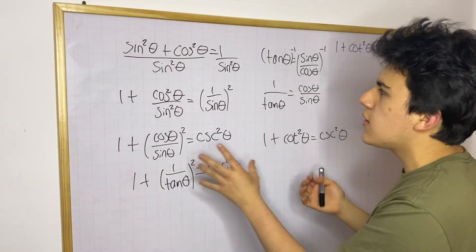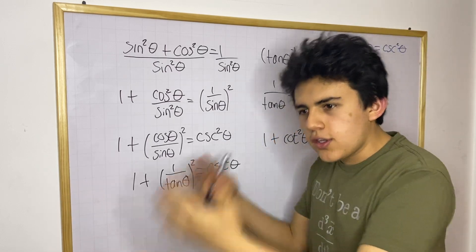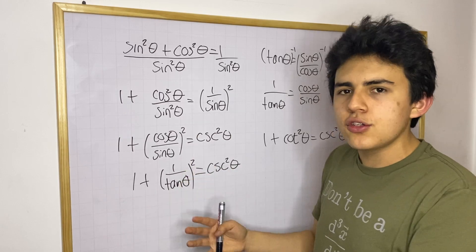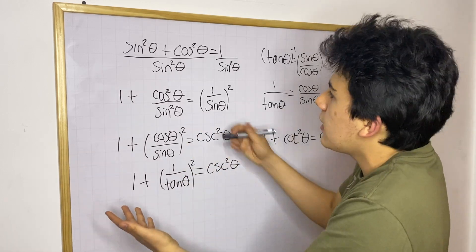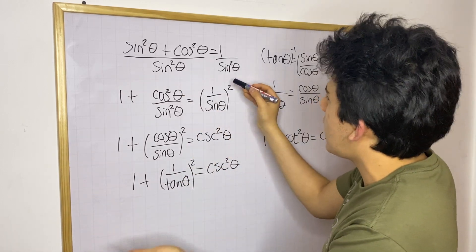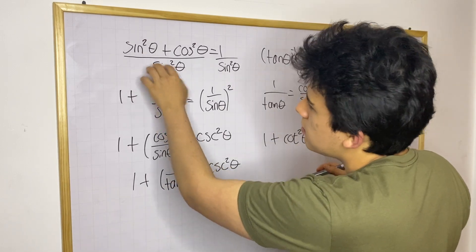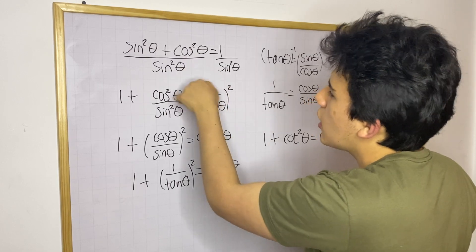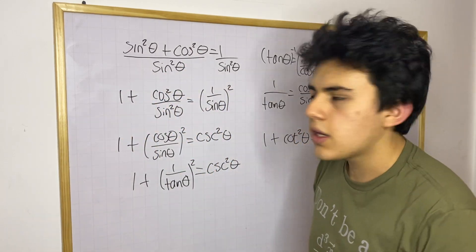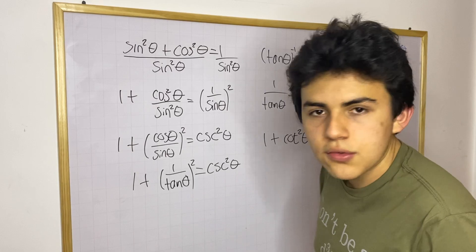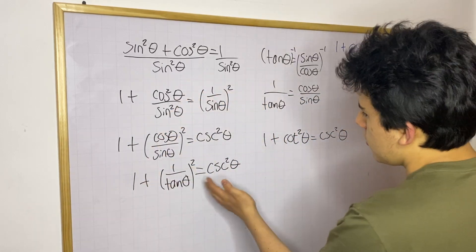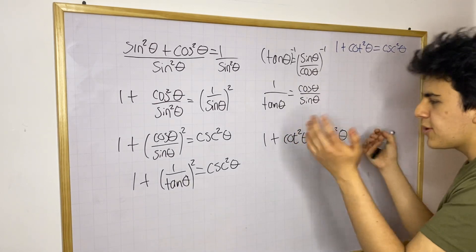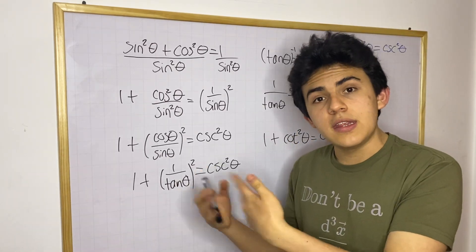So you can see it's pretty simple. The only thing you need to do is start somewhere — in this case, dividing by sine squared theta on both sides. You get one by dividing the first term, cosine theta over sine gives you cotangent squared, and one over sine gives you cosecant. And that's how you get this equation. Now let's continue to a different equation.